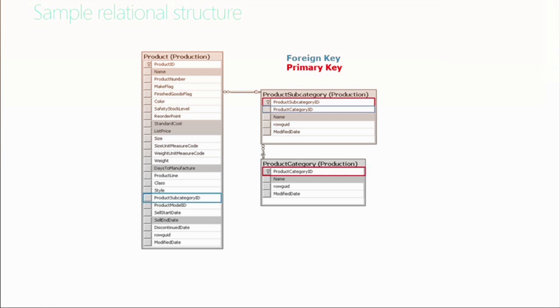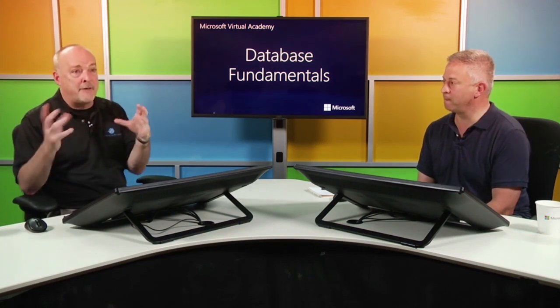That relational structure maps directly to Pete's CD spreadsheet — the products would be the CDs, and the genres in the spreadsheet would map to category, with subcategories like bebop under jazz. We could take that spreadsheet and create a database using a similar approach with related tables. That's a great example of how a flat spreadsheet can become a relational database with multiple connected tables.